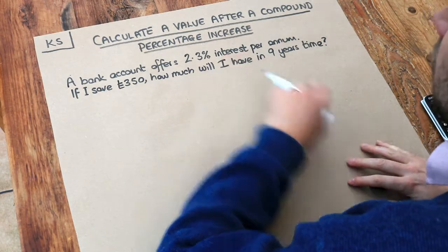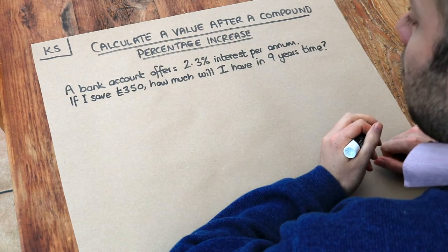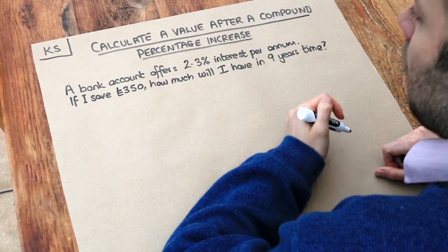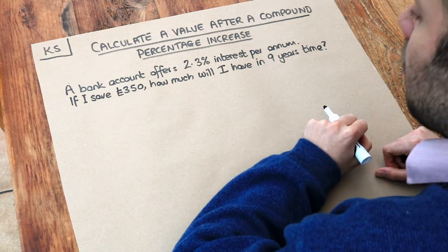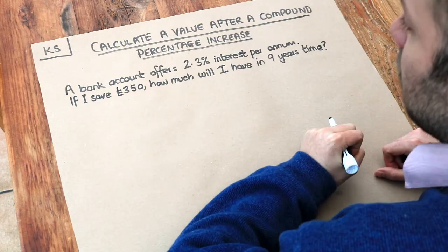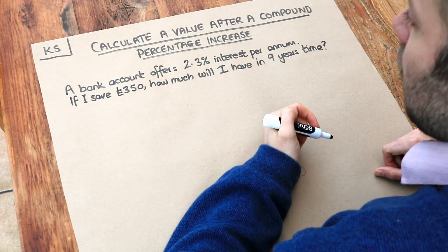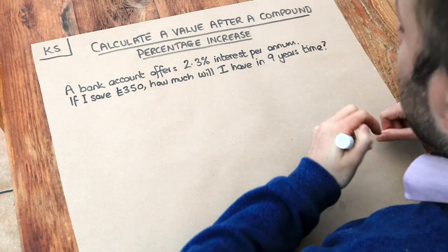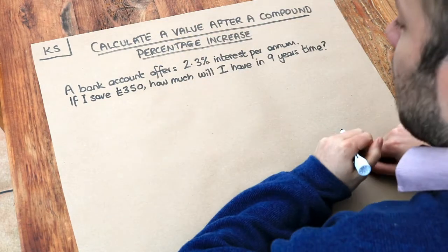Now what interest is, is what percentage extra your bank account might give you. So for example, if you save £1,000 into a bank account, then after one year, that's what per annum means, they will give you 2.3% of that £1,000 on top of what you already have. And then after another year, they'll see what you currently have and they'll add 2.3% of what you have onto your account.